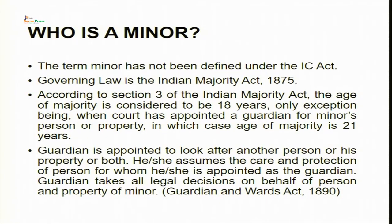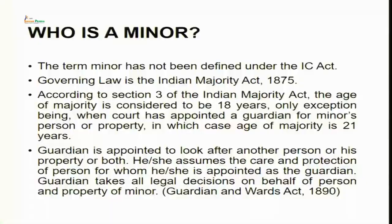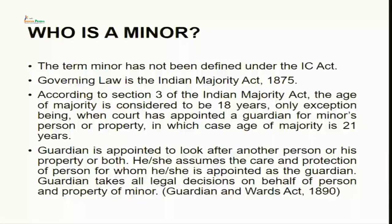Moving on to who is a minor — the term minor has not been defined under the Indian Contract Act. Section 11 says a person who has attained the age of majority is competent to enter into a contract, implying that a minor is legally incompetent. But who is a minor is not expressly defined in the Act. The governing law is the Indian Majority Act of 1875. You have to keep in mind that you will come across many legislations wherein the term minor will be used.